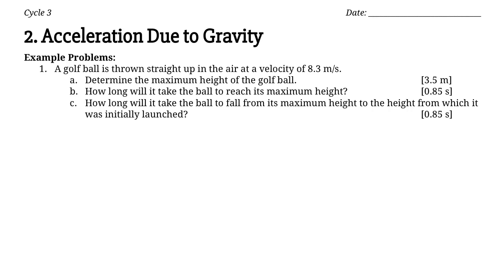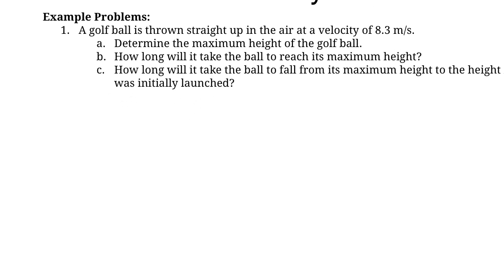These problems involve gravity and objects that are falling due to gravity. We call this type of motion free fall when an object is just falling due to gravity. A golf ball is thrown straight up in the air at a velocity of 8.3 meters per second. It's shot straight up in the air and it's probably going to follow some sort of path. We'll assume it goes straight up and down, and the initial velocity is 8.3 meters per second.